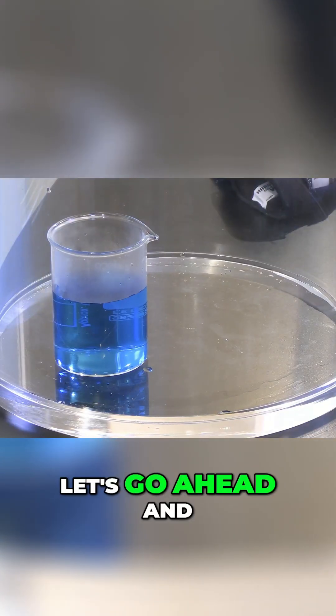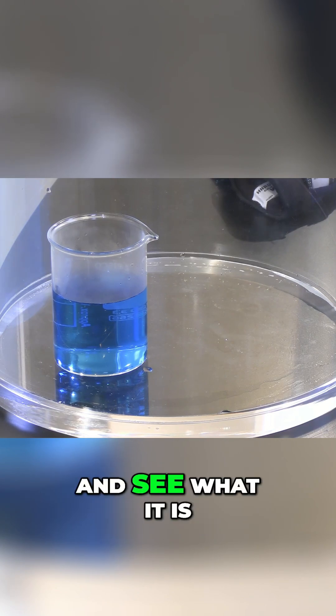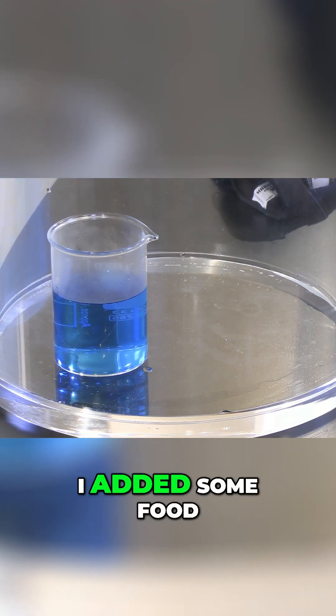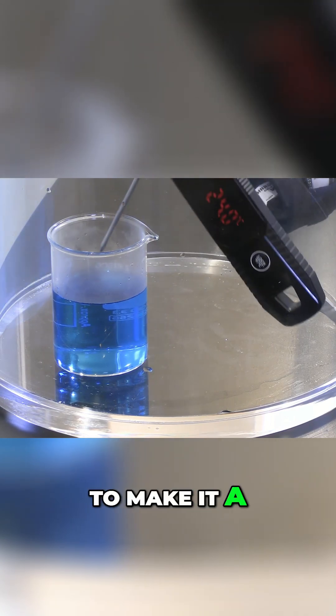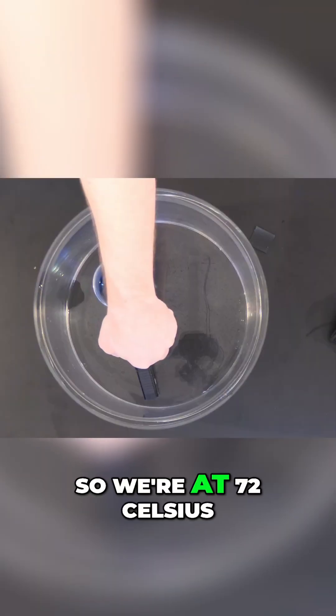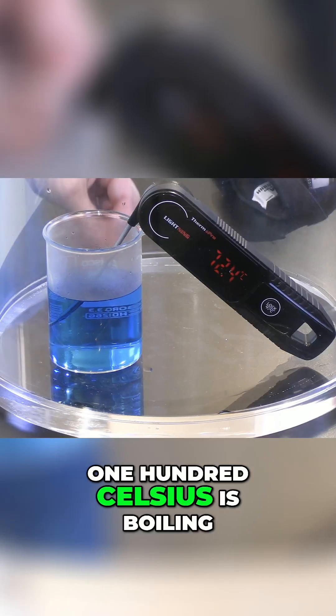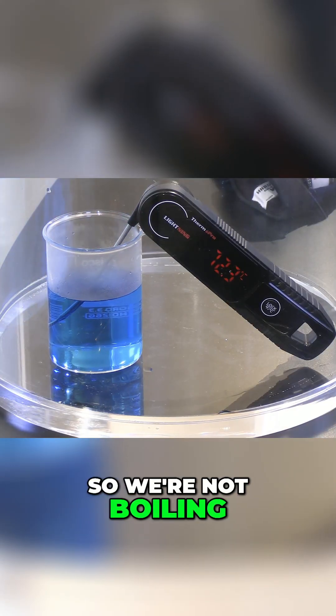Okay, here we have a beaker of water. Let's put the thermometer inside and see what it is. By the way, I added some food coloring to make it easier to see. So we're at 72 Celsius. Remember, 100 Celsius is boiling, so we're not boiling.